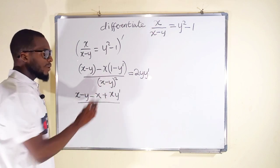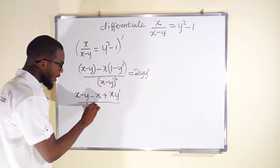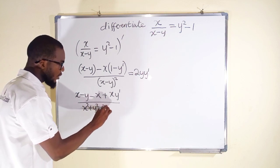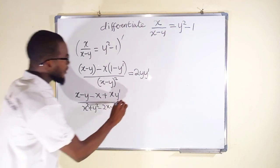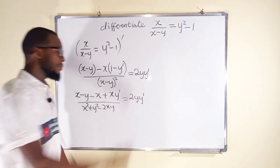So now let us expand this. If you expand this binomial you get x squared plus y squared minus 2xy. And to the right we still have 2y y prime.